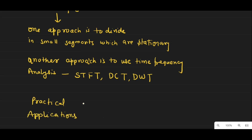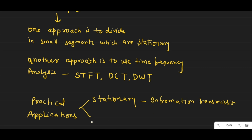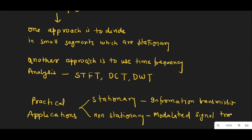In audio and image processing, stationary signals are often used to remove noise or enhance certain features of a signal, while non-stationary signals can be used to identify specific features of a signal that change over time.